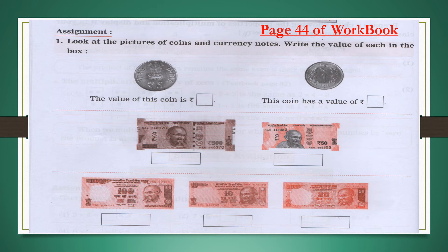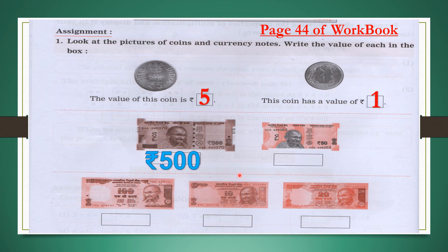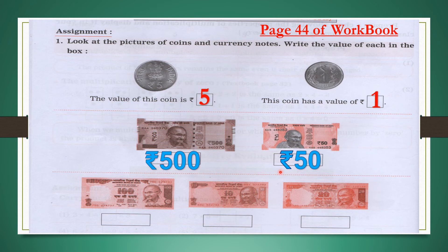Children, this is page 44 of your workbook. Look at the pictures of coins and currency notes and write the value of each in the box. The first coin is 5 rupees — the rupee sign is already given, so just write 5. The next coin has a value of 1 rupee. Don't forget to write the rupee sign before the numbers; rupees always comes with the sign.